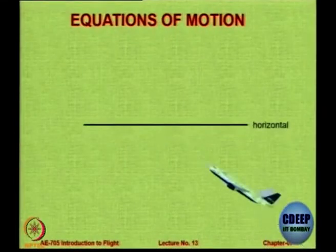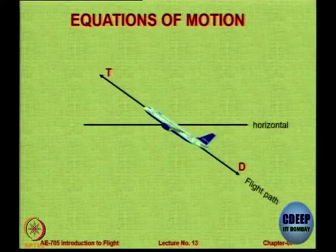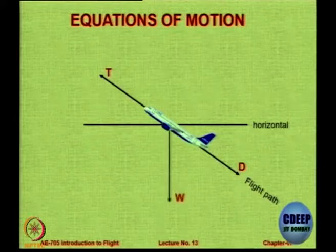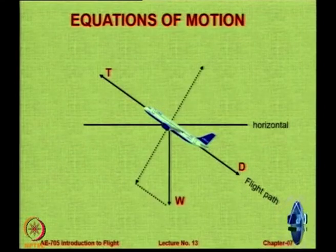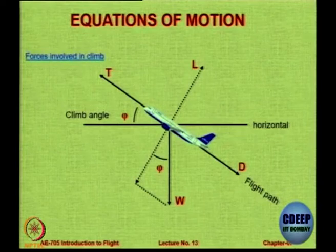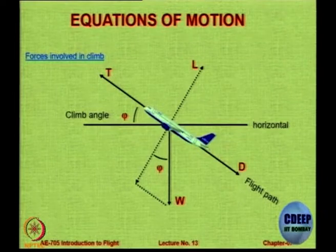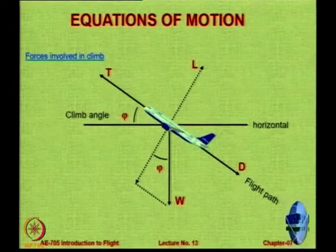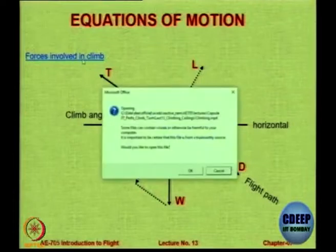Let us see the equations of motion. We have a reference line and a climb angle phi. Thrust and drag act along the flight path, lift acts at right angles to it, and weight acts toward the earth's center. Here is a very interesting observation — the aircraft is climbing, so do you think lift is more than weight? That is wrong; it is actually a misconception. Lift will be less than weight during climbing, because it is thrust that gives you the upward force, not lift. In fact, if lift equals weight, the aircraft will not climb properly.